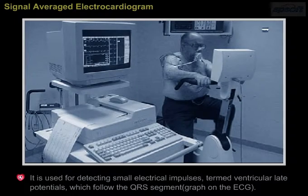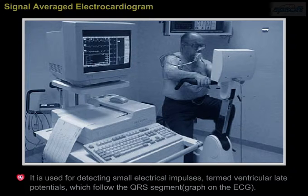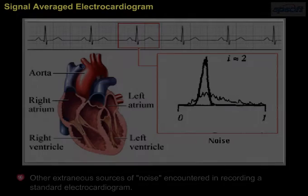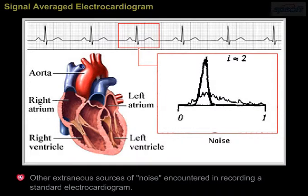It is used for detecting small electrical impulses, termed ventricular late potentials, which follow the QRS segment on the ECG. They are embedded in the electrocardiogram, but ordinarily obscured by skeletal muscle activity and other extraneous sources of noise encountered in recording a standard electrocardiogram.